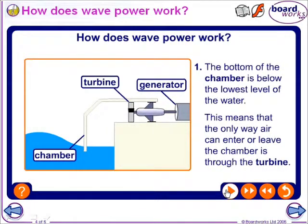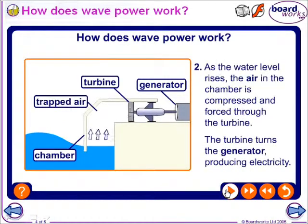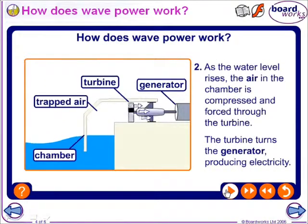Next, wave power. The bottom of the chamber is below the lowest level of the water. This means that the only way air can enter or leave the chamber is through the turbine. As the water level rises, the air in the chamber is compressed and forced through the turbine. The turbine turns the generator, producing electricity.